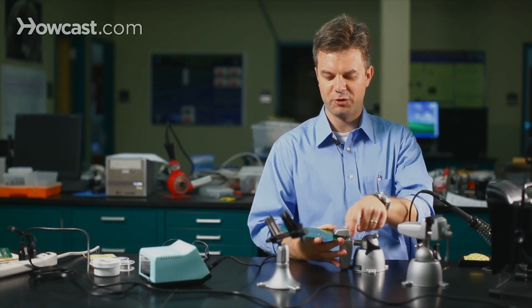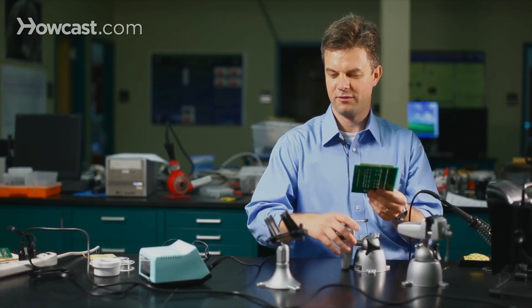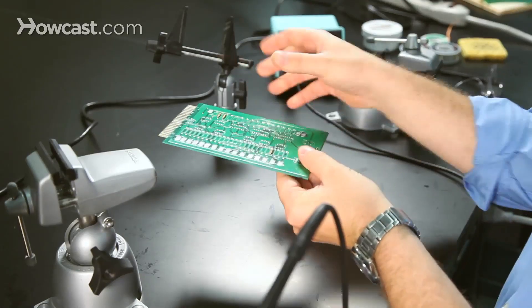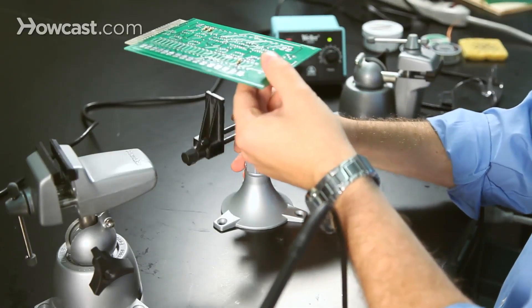For some smaller boards, it may be possible to grip it from the edges like this, and for that you might use a vise that has a wider jaw.